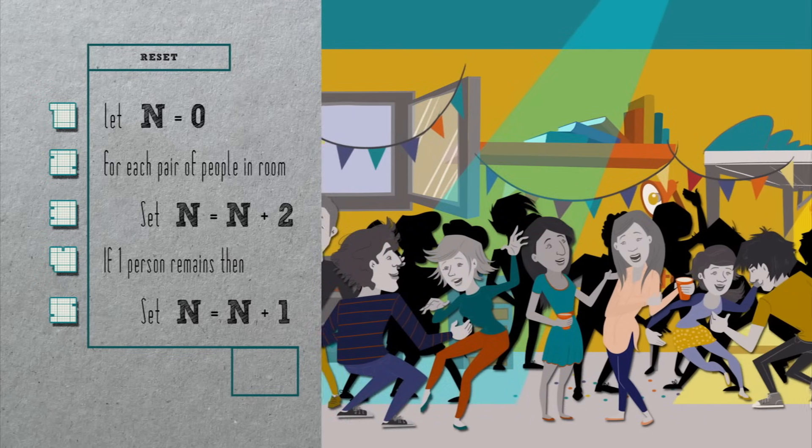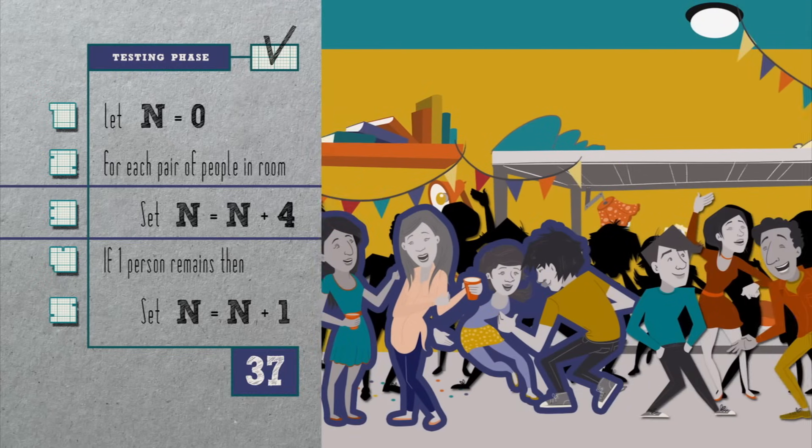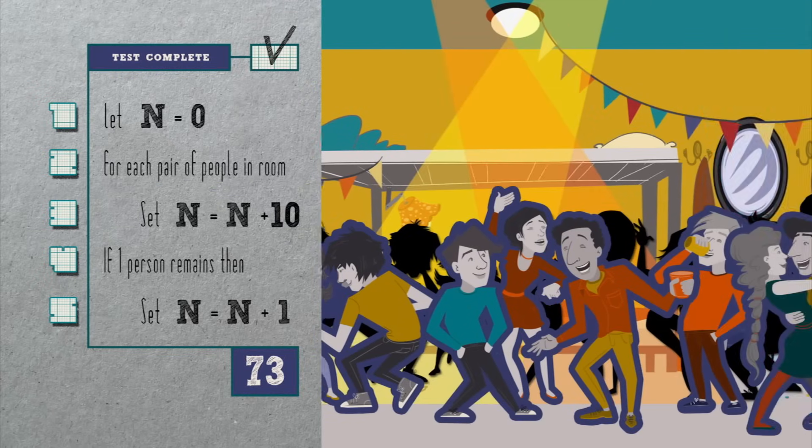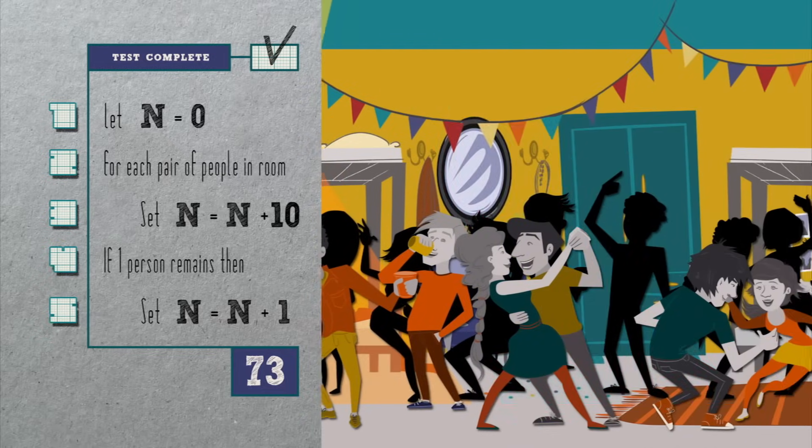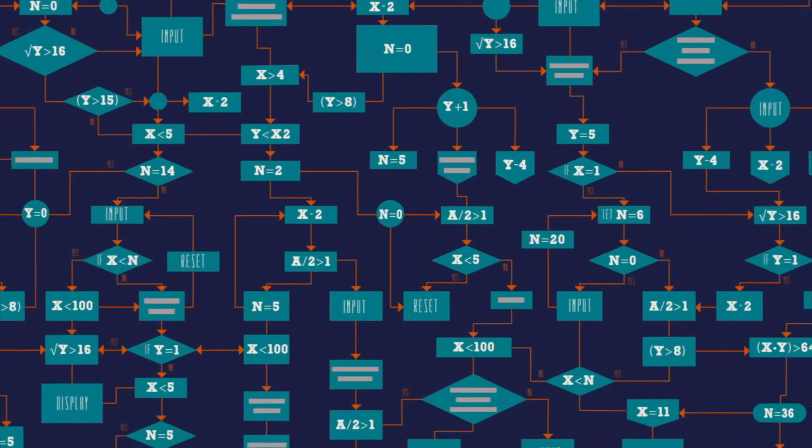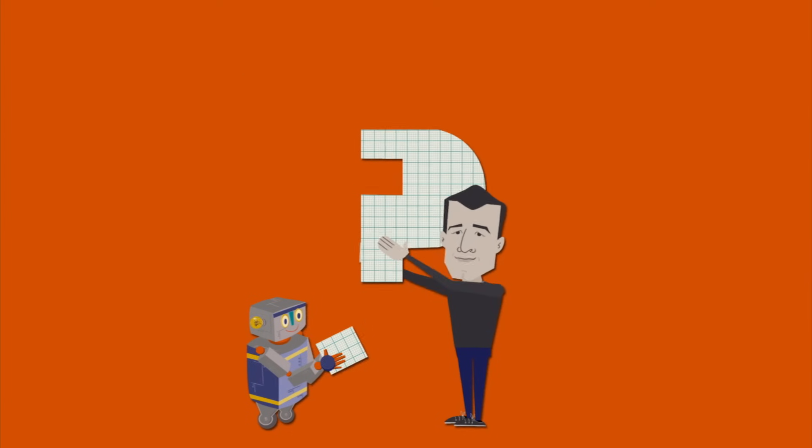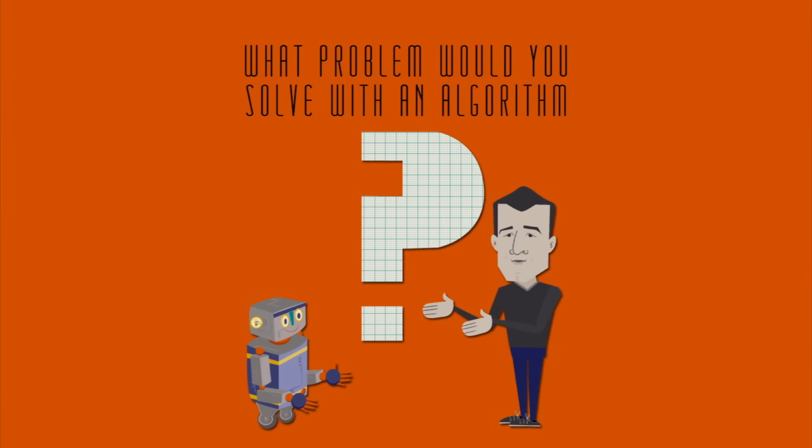Can we do even better? Well, we could count in threes or fours or even fives and tens, but beyond that it's going to get a little bit difficult to point. At the end of the day, whether executed by computers or humans, algorithms are just a set of instructions with which to solve problems. These were just three. What problem would you solve with an algorithm?